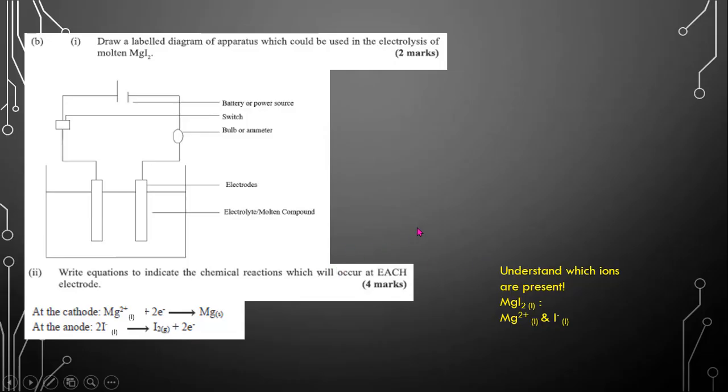Part B, draw a labeled diagram of apparatus which could be used in the electrolysis of molten magnesium iodide.